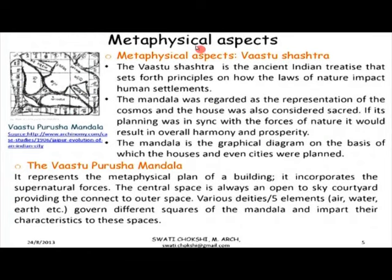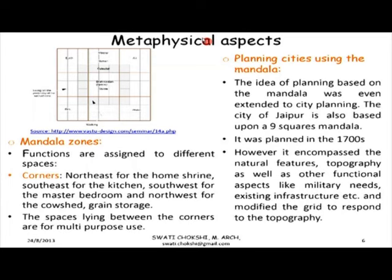There is a spiritual thread that underlies most Indian conceptions. The Vastu Shastra is one such treatise that lays forth norms on how planning can be based on the impact of the laws of nature. The house is considered sacred and its planning is based upon the Vastu Purush Mandala, a representation of the cosmos. The idea is that if planning is in sync with the forces of nature, peace and harmony would prevail. The diagram shows zones assigned to mandalas based on the qualities of deities, with the centre usually left as an open-to-sky courtyard, based on environmental criteria for India. Cities could also be planned on a similar concept.